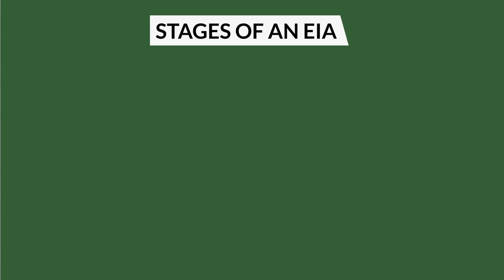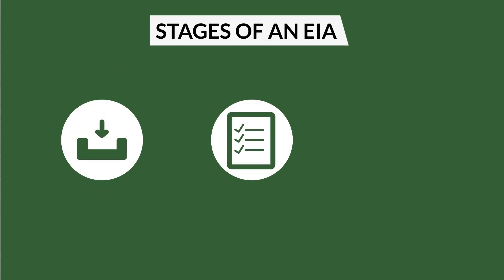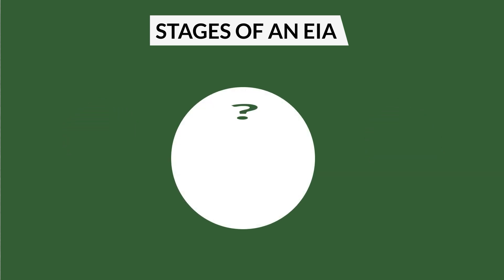There are nine stages in the EIA process. Depending on who you are, you may have a chance to provide input, review, or give feedback on various stages. Each stage seeks to answer the following questions.